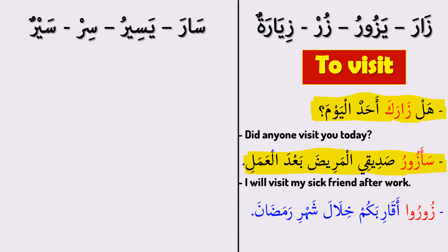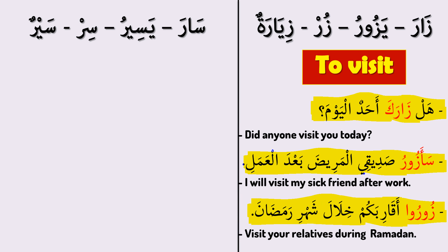The last sentence for this verb: زوروا أقاربكم خلال شهر رمضان. It means 'Visit your relatives during Ramadan.' زوروا — visit (command), أقاربكم — your relatives, خلال شهر رمضان — during the month of Ramadan. Now let's see the meaning of the other verb.